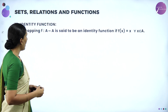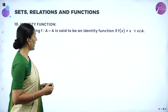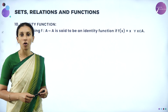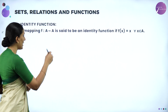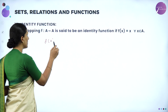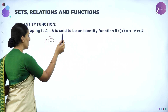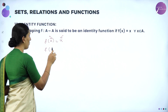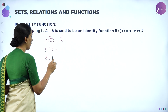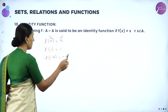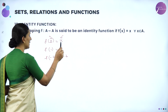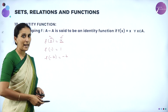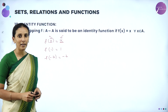Identity function: a mapping f from A to A is said to be an identity function if f(x) = x for all x ∈ A. Whatever value you input, you get the same value as output. For example, f(1) = 1, f(-7) = -7 — whatever you input as x, the same thing you get as output. Such types of functions are called identity functions.